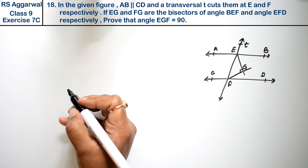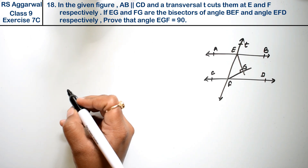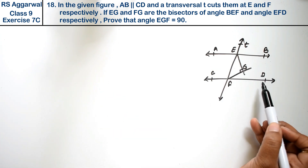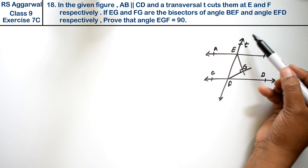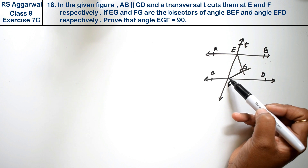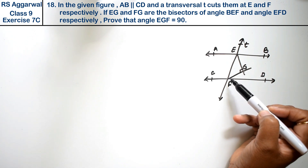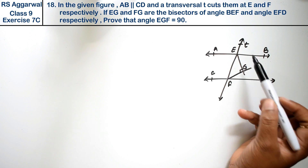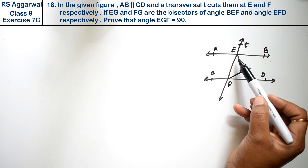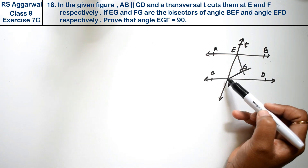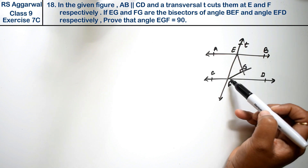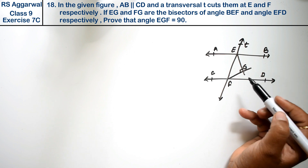Let's do question number 18 of Exercise 7C, lines and angles. In the given figure, AB is parallel to CD and the transversal T cuts at points E and F respectively. EG and FG are the bisectors of angle BEF and angle EFD. We have to prove that angle EGF is equal to 90 degrees.